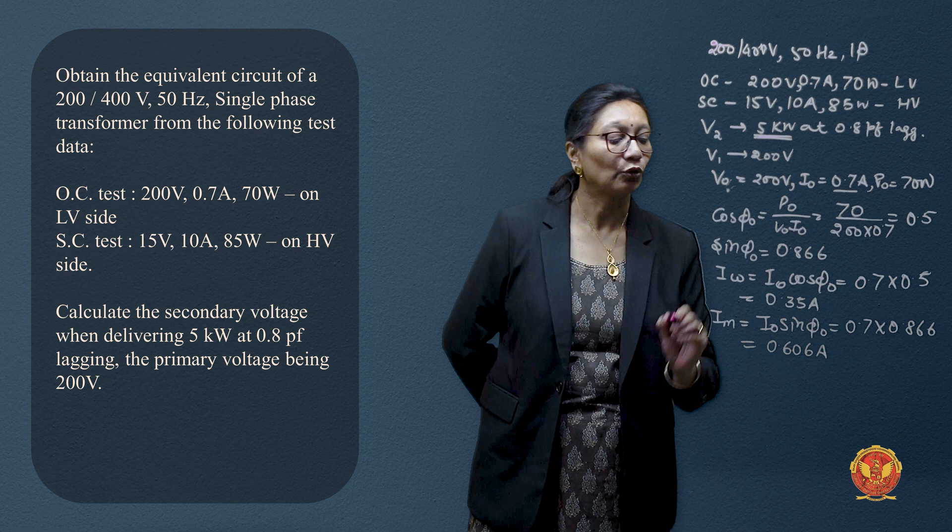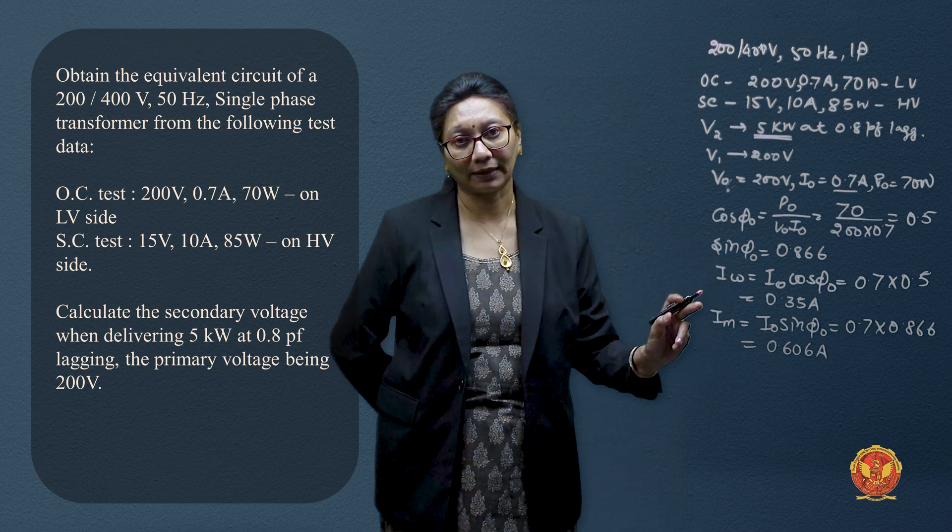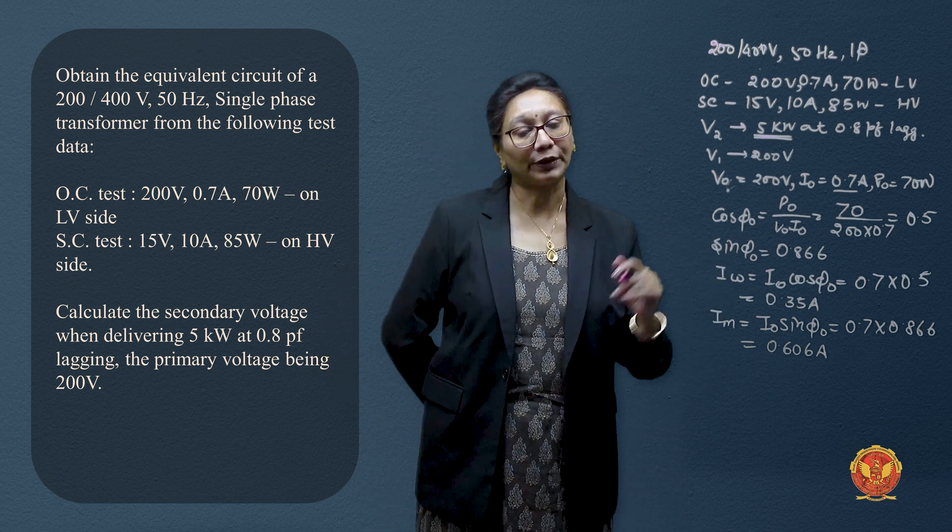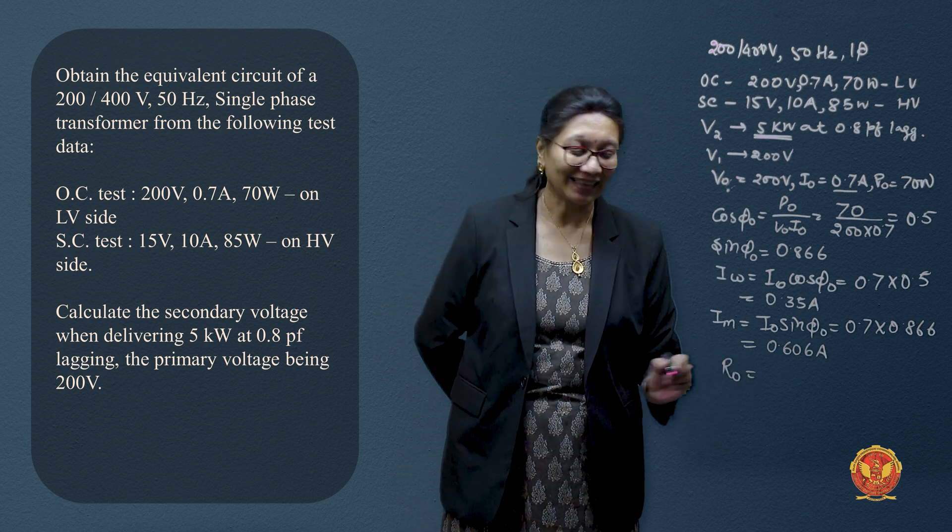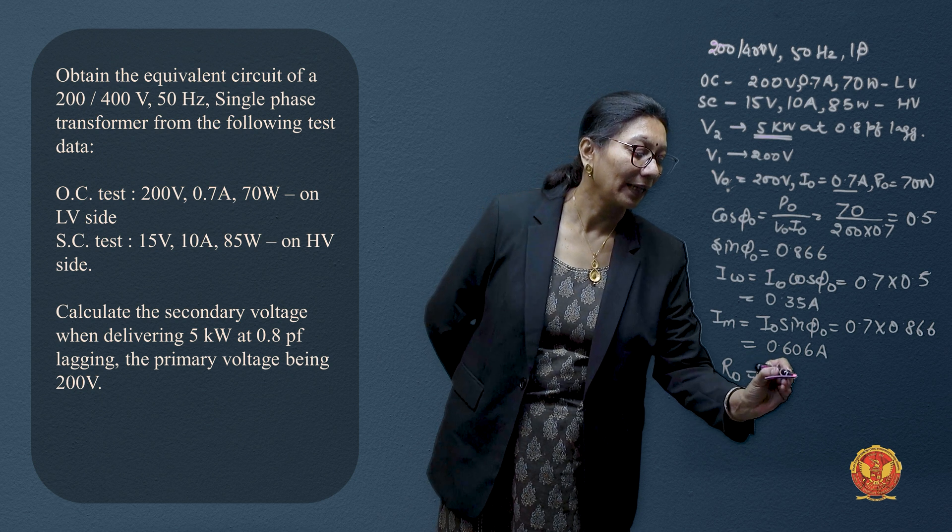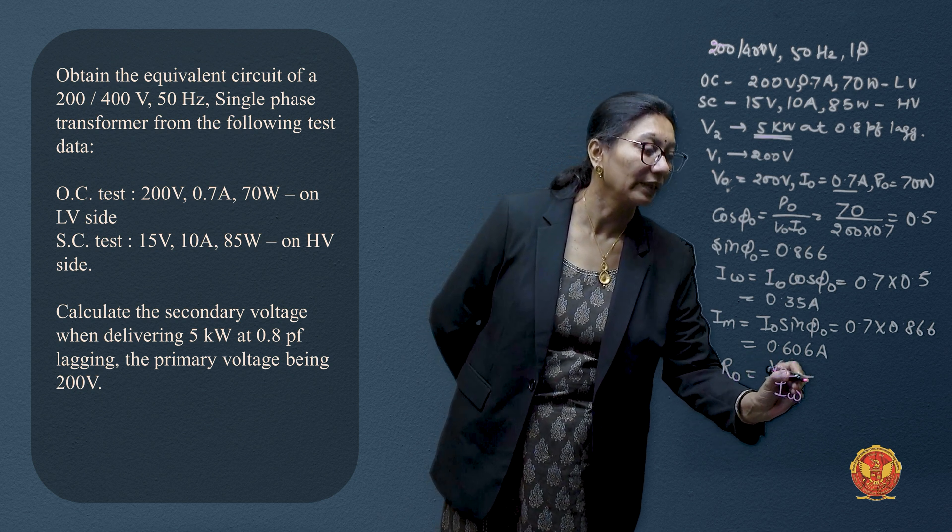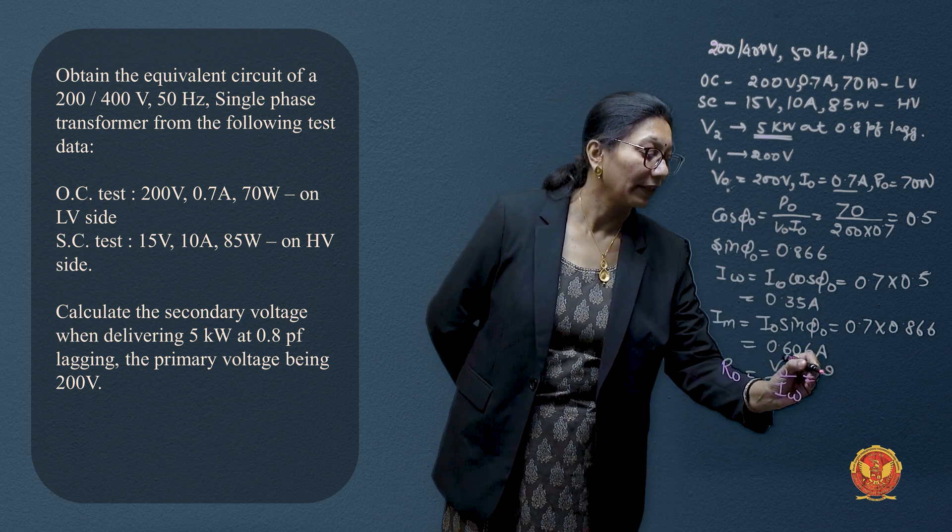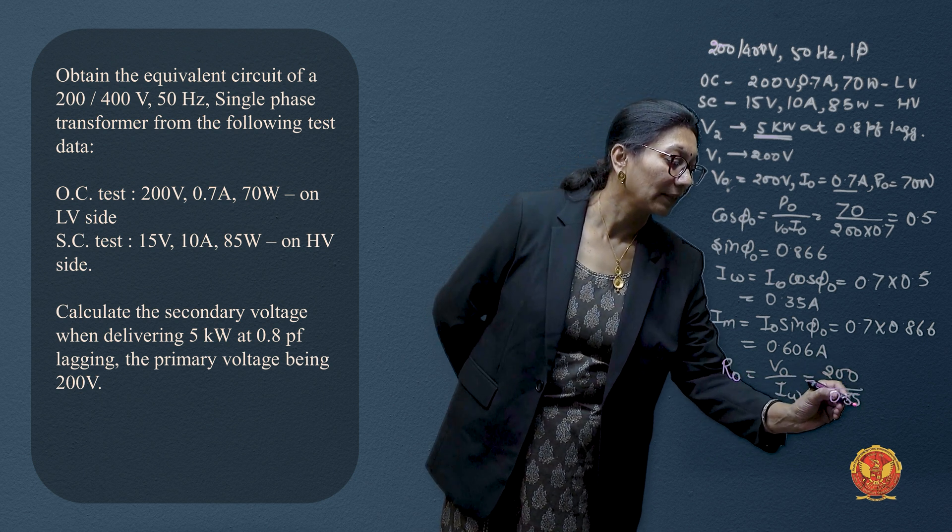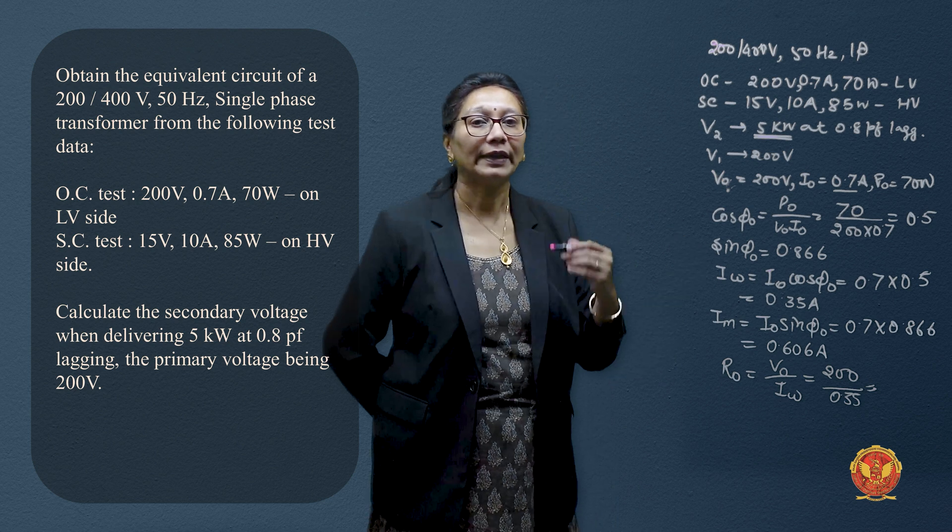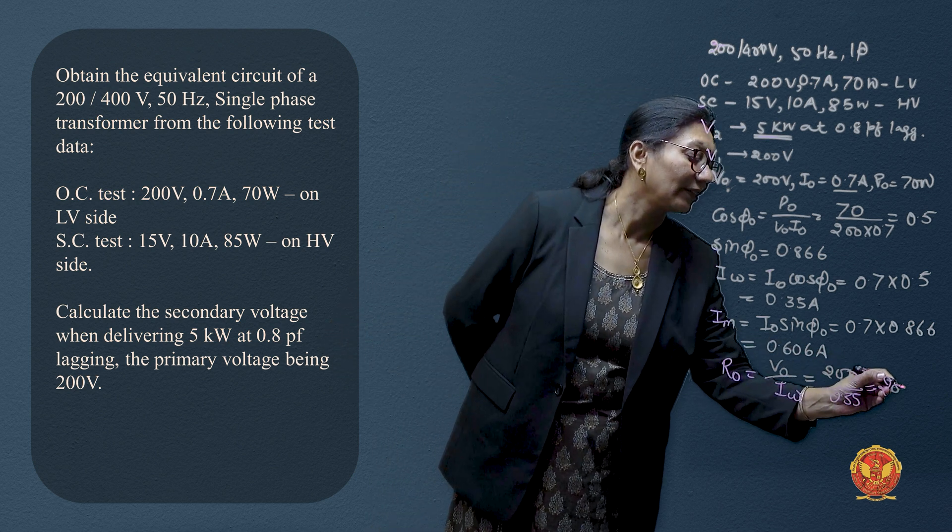Now since we have these two components and we have voltages also, we can remove reactive and resistive components of shunt branch which is V by I. So this is 200 divided by 0.35, so shunt branch resistance is 571.4 ohms.